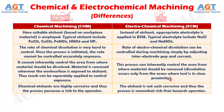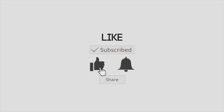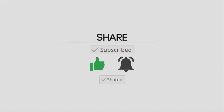Difference No. 9: In chemical machining, chemical etchants are highly corrosive and thus the process poses a risk to the operator, whereas in electrochemical machining, the electrolyte is not as corrosive and thus the process is somewhat risk-free towards the operator.